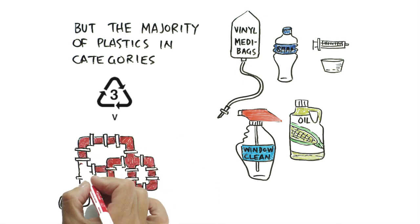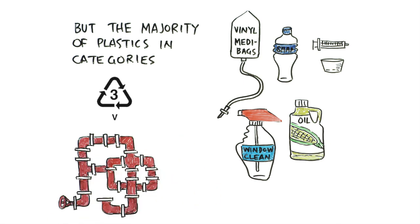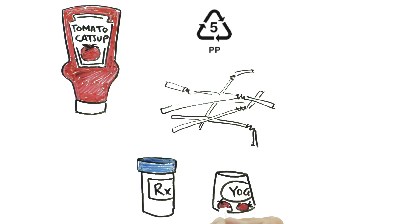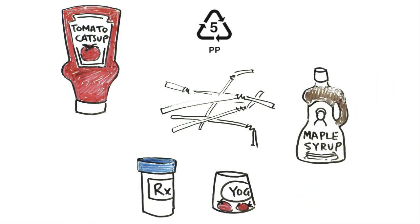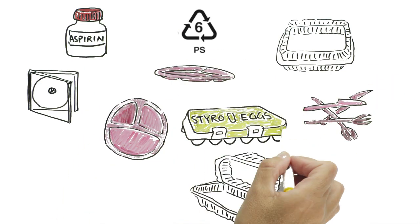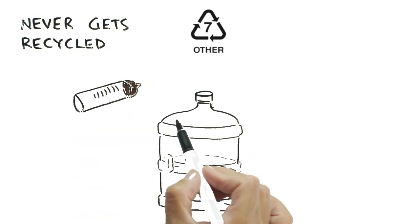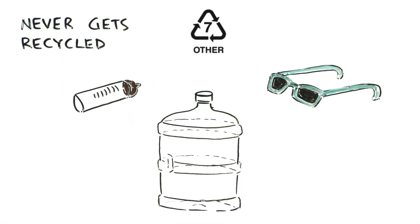But the majority of plastic, such as vinyl products and PVC piping in Category 3, plastic straws and ketchup bottles in Category 5, egg cartons and plastic cutlery in Category 6, and hard, rigid plastics and nylon in Category 7, these things never get recycled.